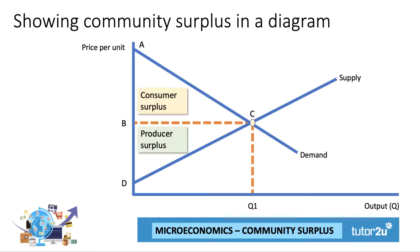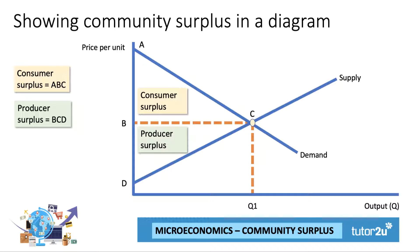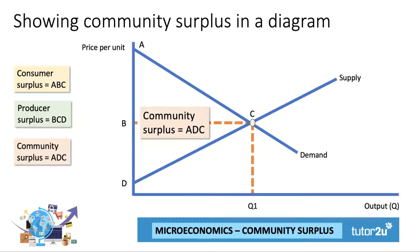At quantity Q1 and price P1, we can show the areas of consumer and producer surplus as two triangles. Consumer surplus is ABC; producer surplus is BCD. So community or social surplus is the combined area ADC. This is an important welfare concept — we have to think about consumers and producers as two key stakeholders in any particular market or industry.